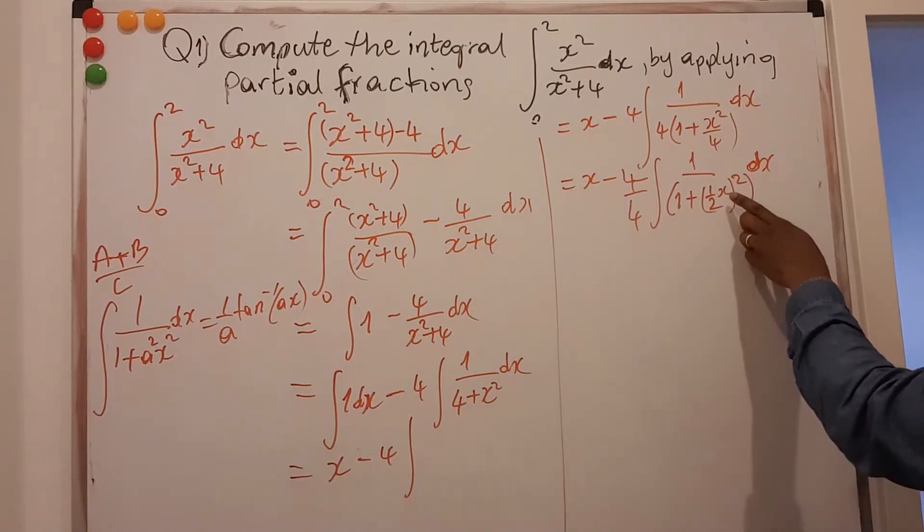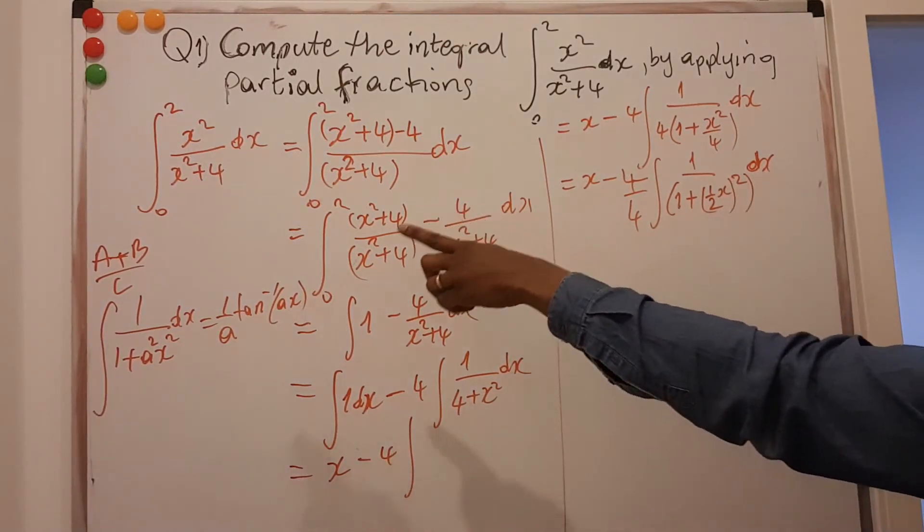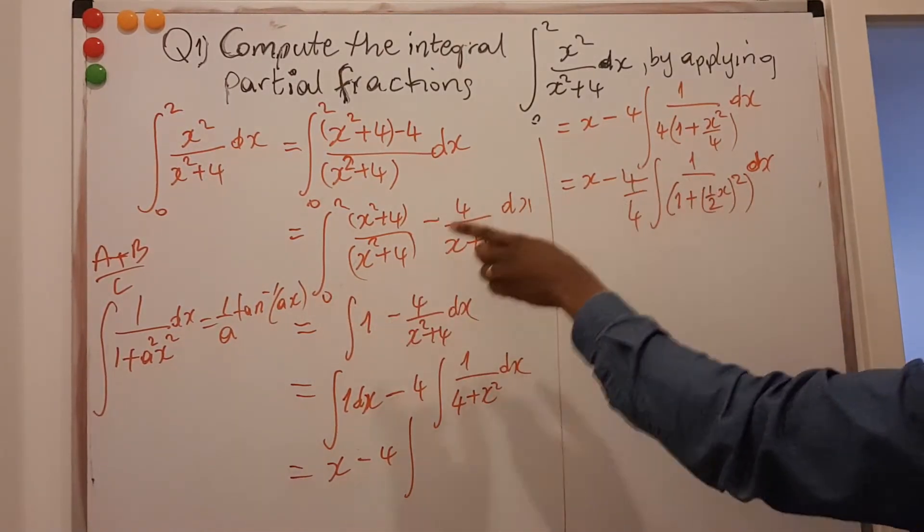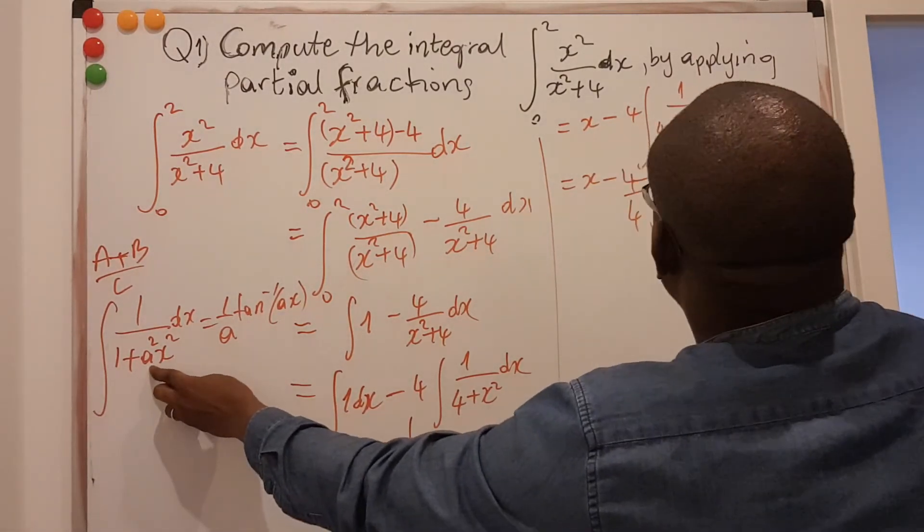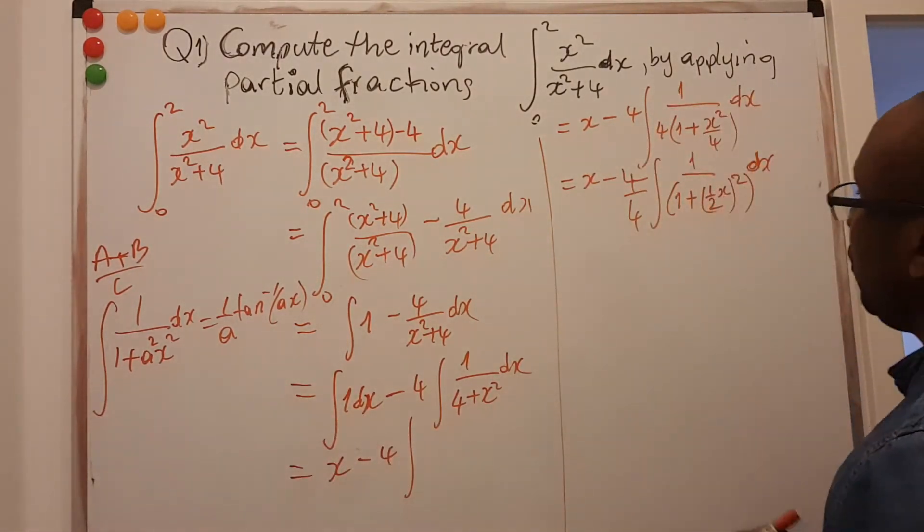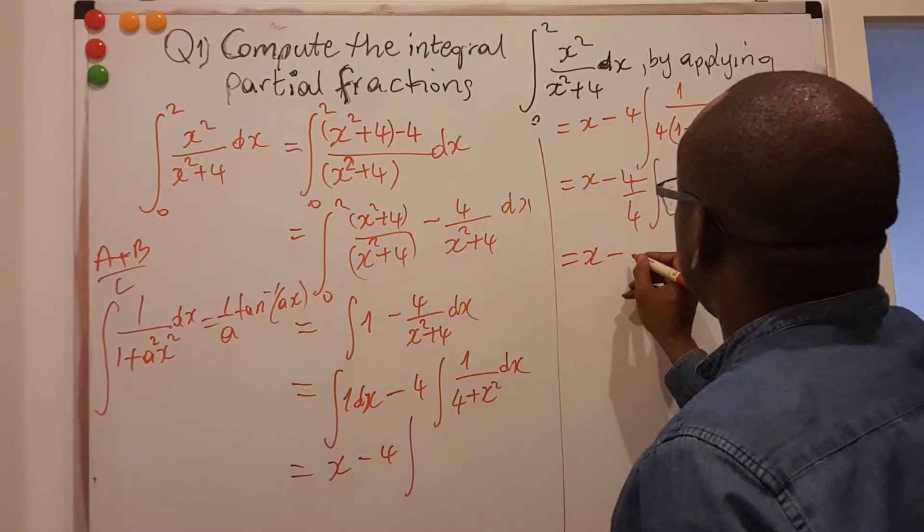These 4 cancels that. And you see, the way I see now, I see that my a is half. The a is half, because this is half to the power 2. So if that is the case, I can just write the answer.